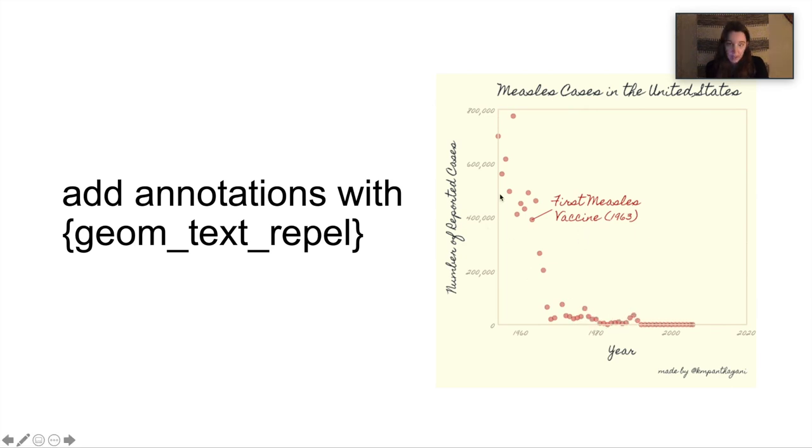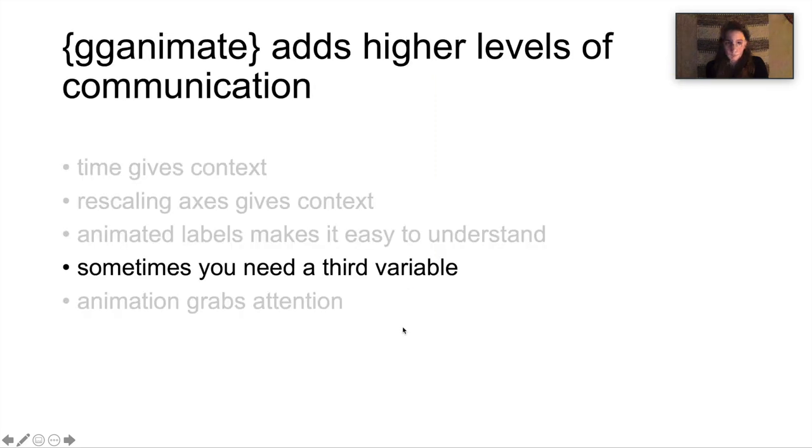You can also use geom_text_repel to annotate other things besides just what the data is. So in this case, this is the measles cases in the US before and after the first measles vaccine. And so here I'm just animating a single data point, labeling a single data point of when the vaccine was introduced.